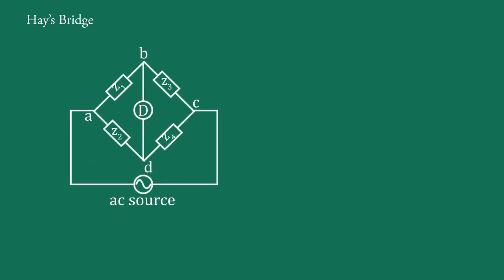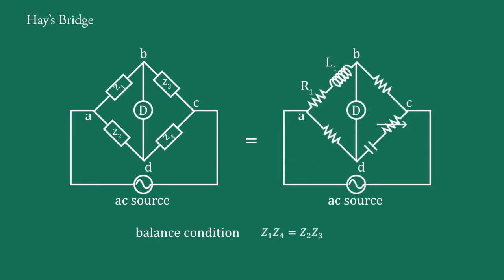In this video, we will learn the Hay Bridge. In a basic bridge, when it is balanced, z1 times z4 equals z2 times z3. If we take all the components like this, then this derived bridge is known as the Hay Bridge. This is the advanced form of Maxwell's bridge. Maxwell's bridge is only appropriate for measuring the medium quality factor; for measuring the high quality factor, the Hay Bridge is used.